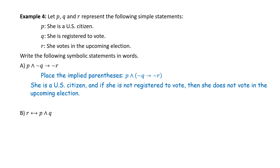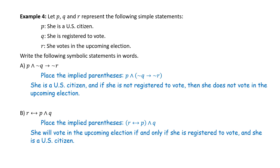Part B: R ↔ P ∧ Q. In the absence of parentheses, the biconditional is the most dominant connective, so we place implied parentheses around P ∧ Q. In English: 'She will vote in the upcoming election if and only if she is registered to vote and she is a U.S. citizen.'